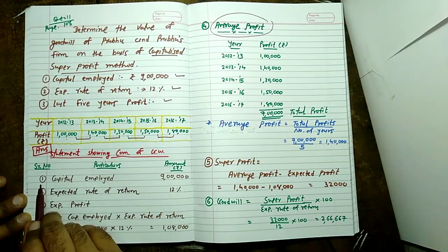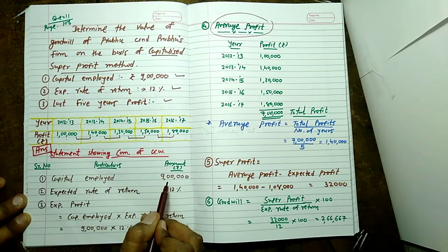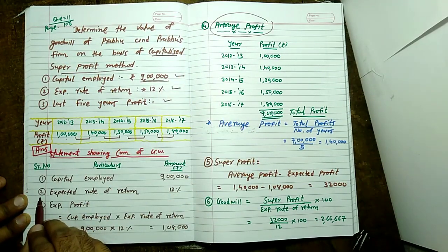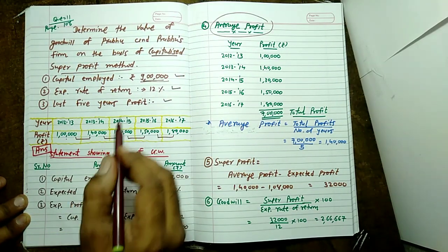Step number one: capital employed 9 lakh, given in question. Step number two: expected rate of return 12 percent.